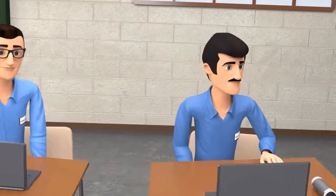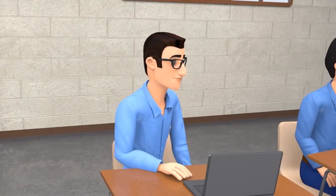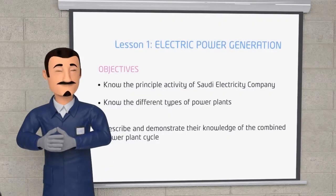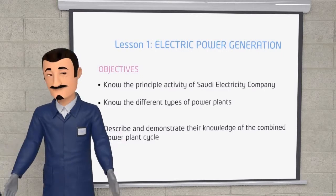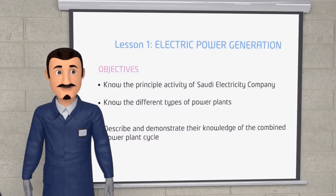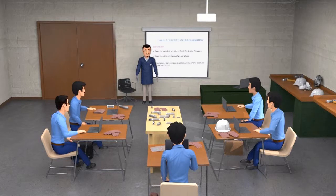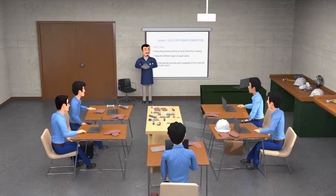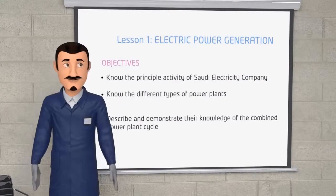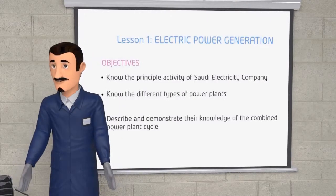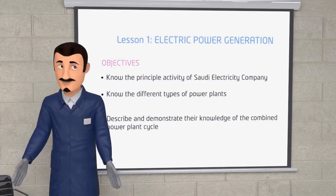As you know, SEC provides electricity to all areas, villages, towns, and cities kingdom-wide utilizing different types of power plants. These power plants are steam power plants, gas power plants, or combined cycle steam and gas power plants. The differences of these power plants are in the design, size, and operating systems and of course in their capacity to produce power. You see SEC Towers traveling all over the kingdom — it empowers you and makes you proud that you belong to this company.